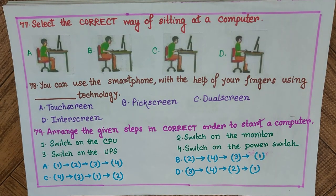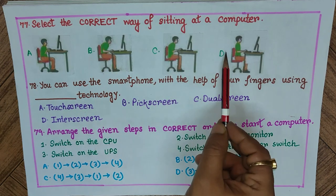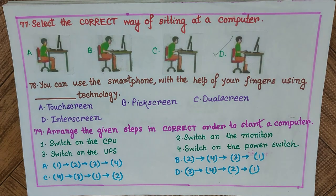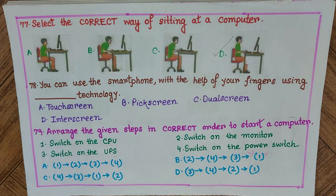Question 77: Select the correct way of sitting at a computer. When sitting in front of a computer, your eyes should be level with the monitor, your backbone should be straight, and your elbows should be at the level of the keyboard. The correct posture is answer D. This is also known as ergonomics.